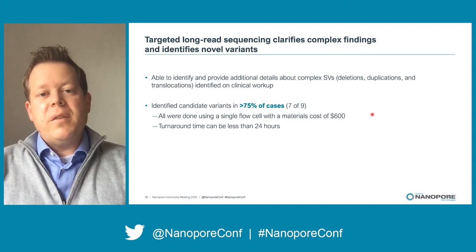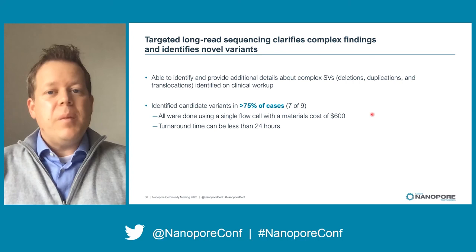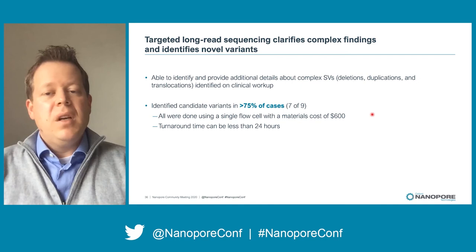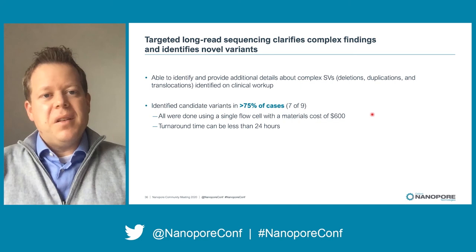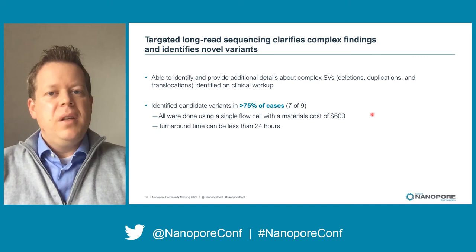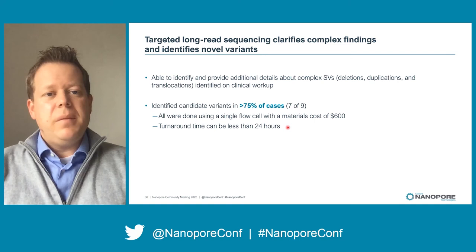What I hope I've convinced you of is that targeted long read sequencing can be used to clarify complex structural changes and identify missing variants. I was very pleased with the variety of aberrations we found — it demonstrates that a large number of things missing with short reads are structural variants that are hard to identify using short read sequencing. On average we used a single GridION or MinION flow cell per case, so the materials cost was about $600 USD per sample — and we buy flow cells in bulk, which helps with price. One thing I didn't discuss is that we can get results back fairly quickly — in one case I was able to get a candidate variant back about 18 hours after receiving DNA, which is about as fast as you can do it with short reads today.